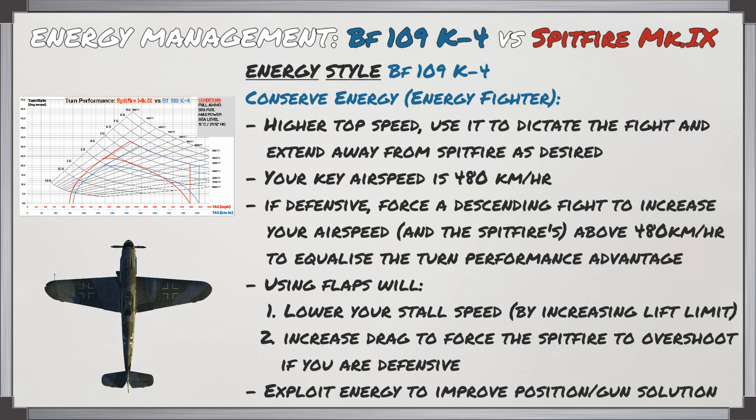The 109 K4's style against the Mk9 is one of energy conservation. It has the high top speed to dictate the fight and extend away from the Spitfire as desired. The key airspeed is 480 km/h, where the sustained turn data crosses. If defensive, try forcing a descending fight to increase airspeed above 480 km/h to equalize the Spitfire's turn performance advantage. Using flaps can lower stall speed and increase lift limit, and in a descending fight can force the Spitfire to overshoot. Even while conserving energy, you can still exploit it to improve position, defeat a gun solution, or create your own.